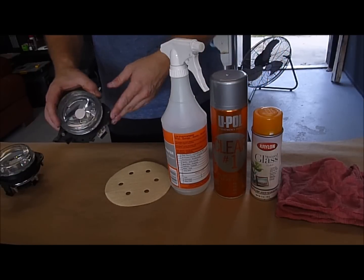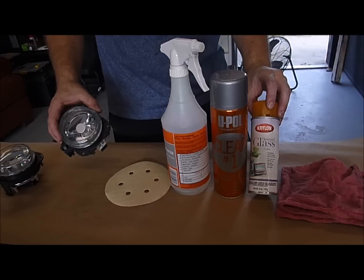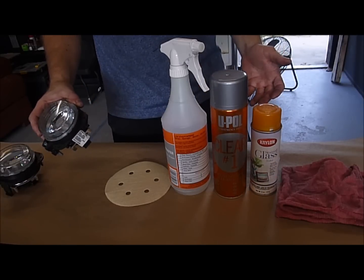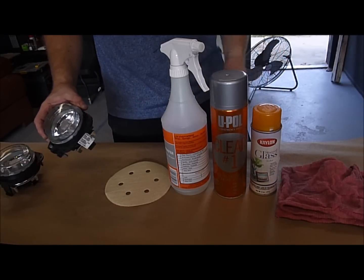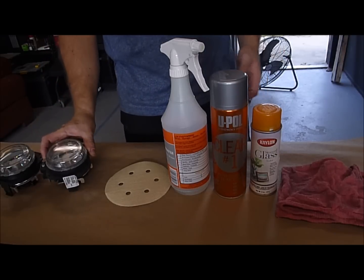The fog lights that we're going to be doing off this Eclipse are actually a glass housing, which is why we're using the glass spray. Anyway, to be honest, I have no idea if it works on plastic. I would imagine it would work the same, but I've never done it. For this process, these are glass. That's what we're using.